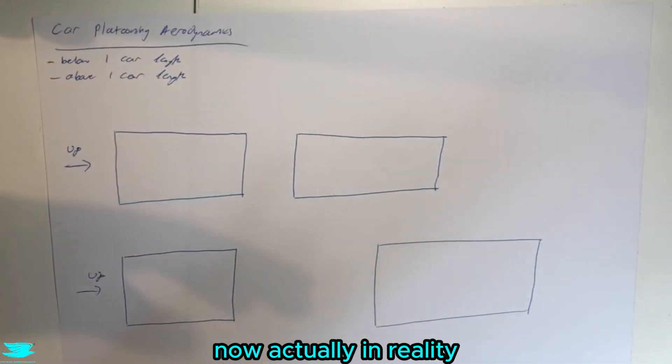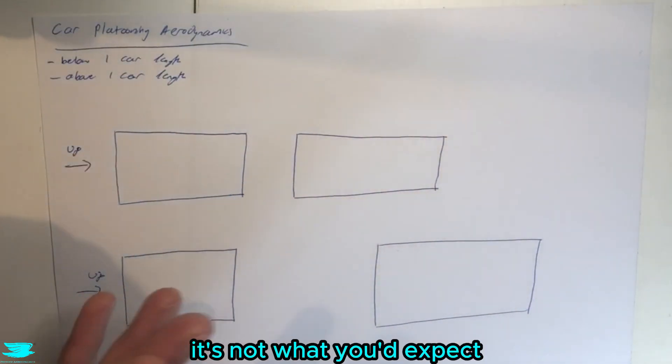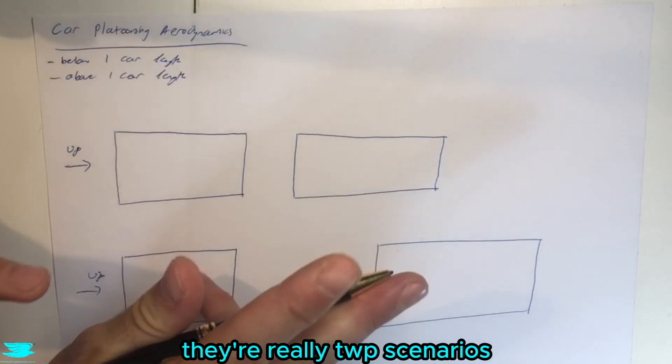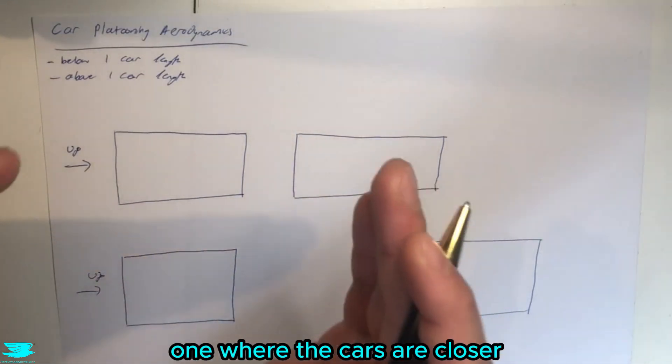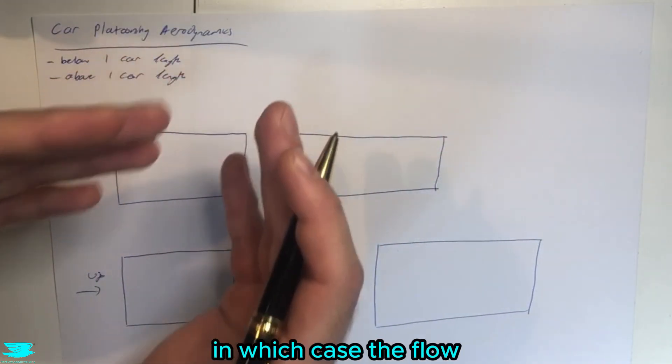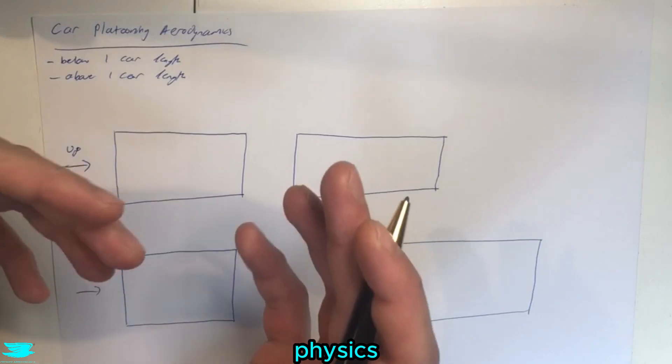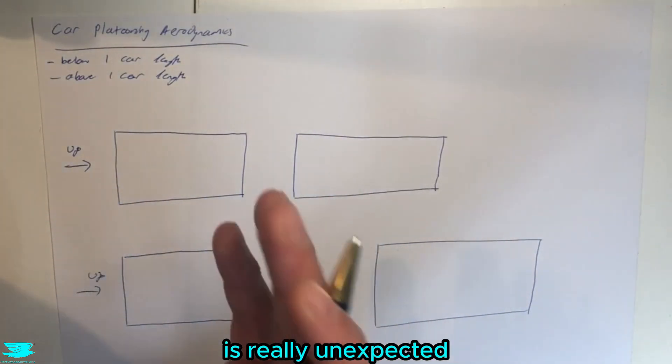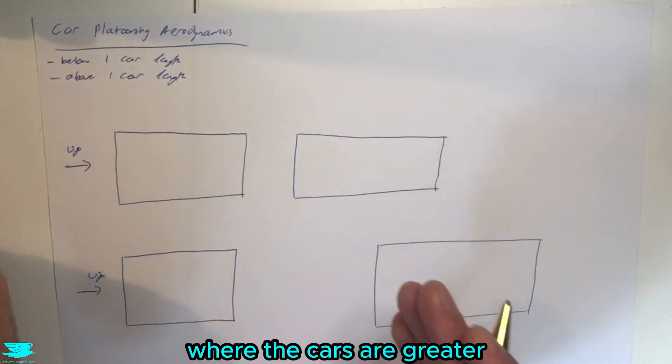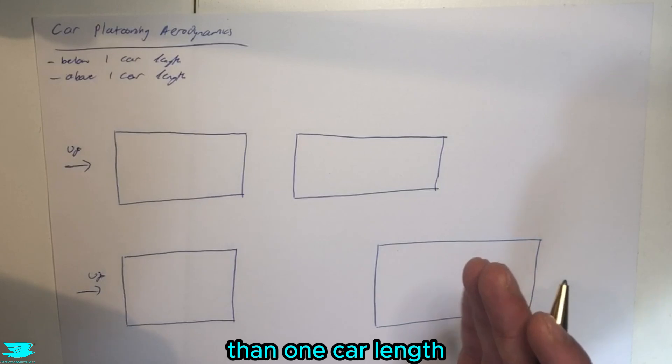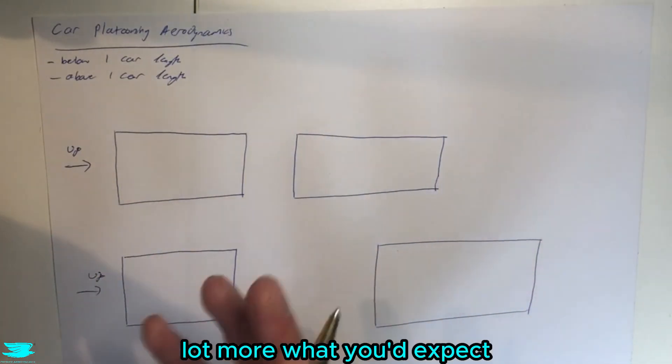Now actually, in reality, the results are very surprising. It's not what you'd expect. There are really two scenarios. One where the cars are closer than one car length, in which case the flow physics and the resulting aerodynamics is really unexpected, and then the other one where the cars are greater than one car length, and then the results become a lot more what you'd expect.